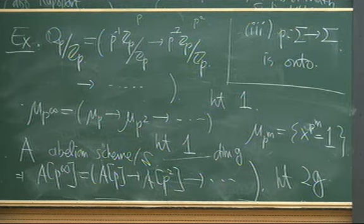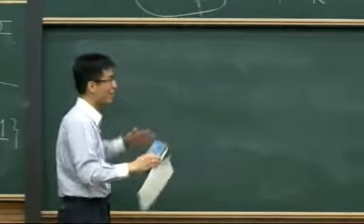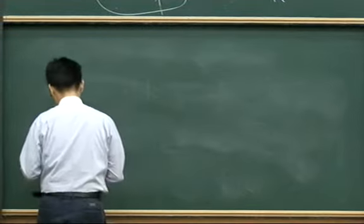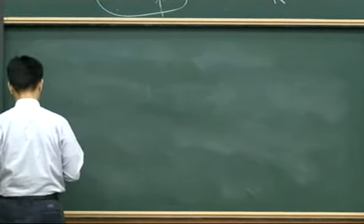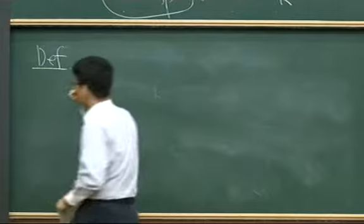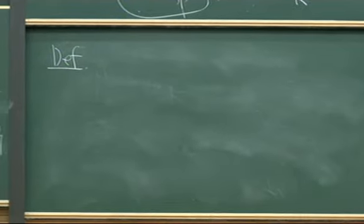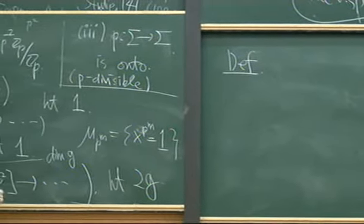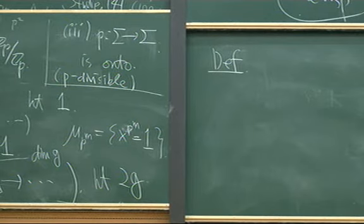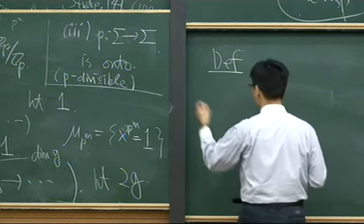There is a Newton polygon attached to Barsotti-Tate groups, often defined over F̄_p. Here height refers to the rank, not the height of the Newton polygon — it's just terminology. The notion of isogeny for Barsotti-Tate groups is defined basically the same way as for abelian varieties: an isogeny is a surjective map with finite kernel, meaning I is onto and the kernel is represented by a locally free finite group scheme.